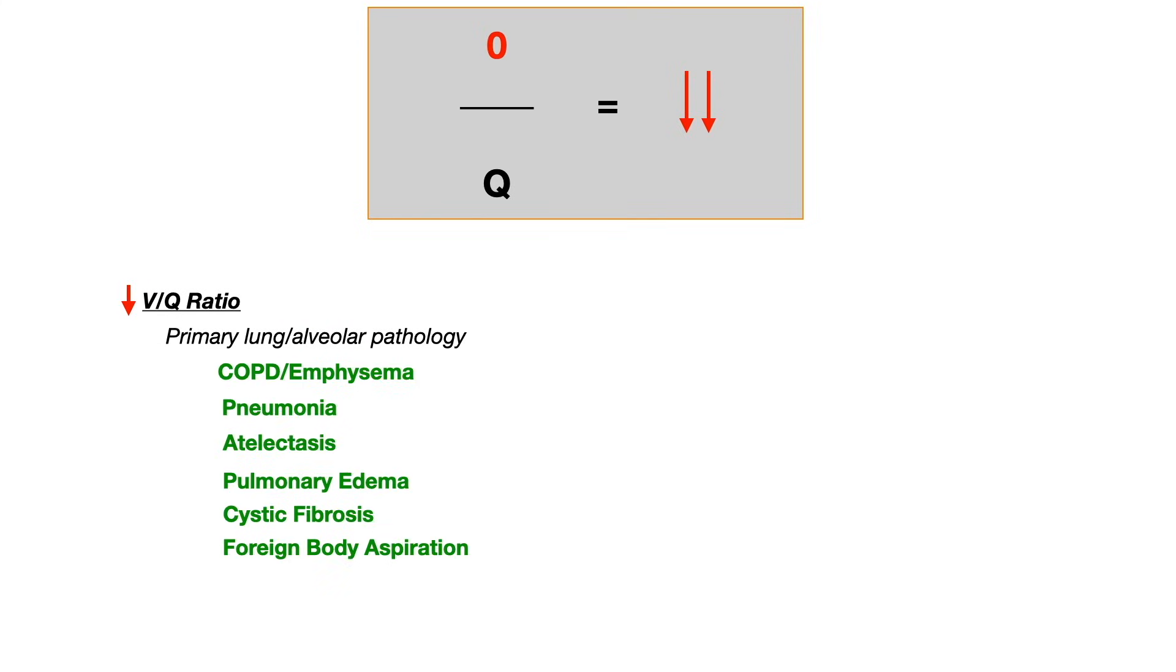So these decreased VQ ratios, these shunts, these are going to be due to primary lung or alveolar pathology. So in the case of a shunt, the lung itself is diseased. So we're talking about things like COPD, emphysema, pneumonia, atelectasis, cystic fibrosis, foreign body aspiration. So something gets into the lung, there is inflammation or a problem in the lung. So primarily, it's a lung problem.